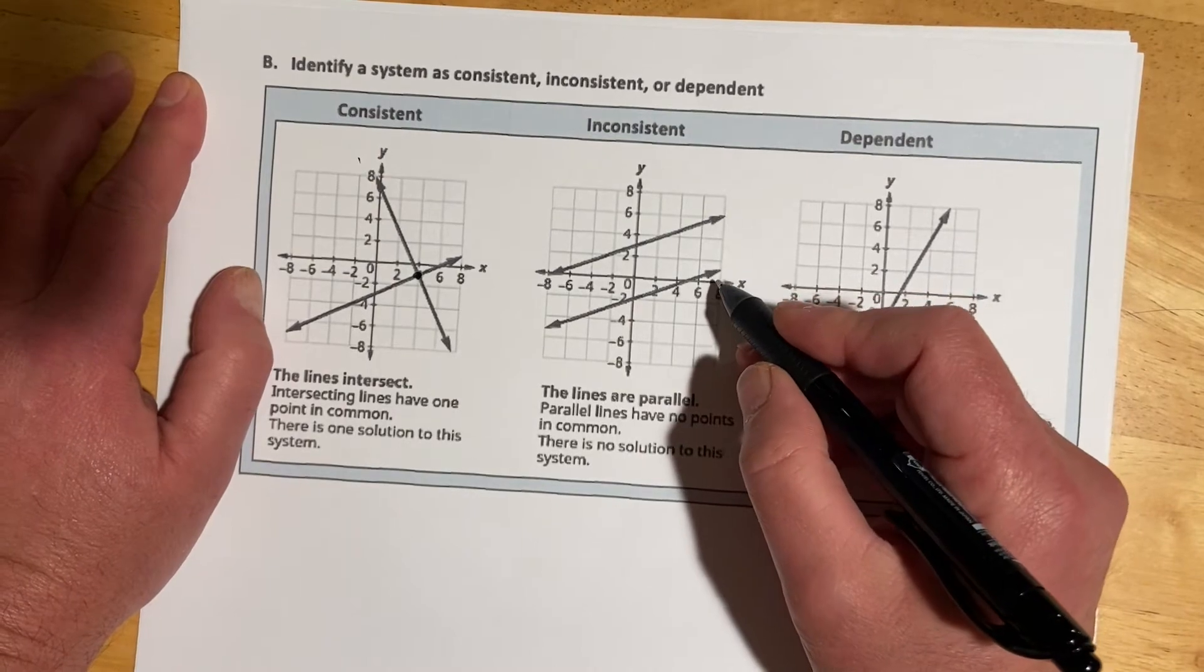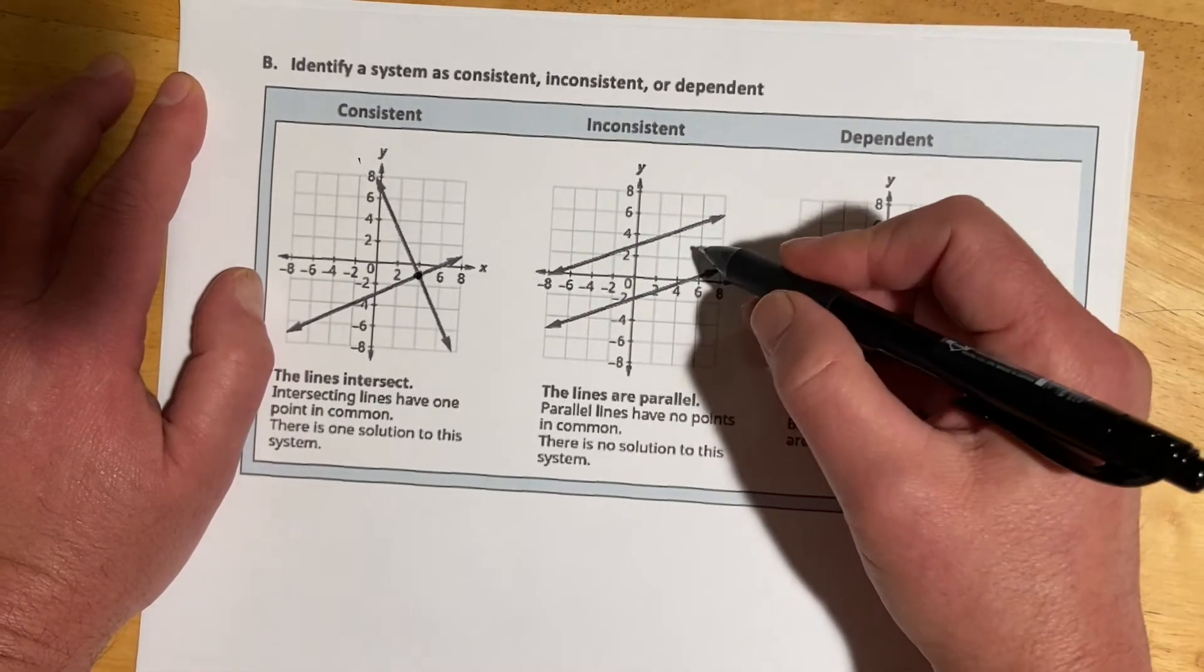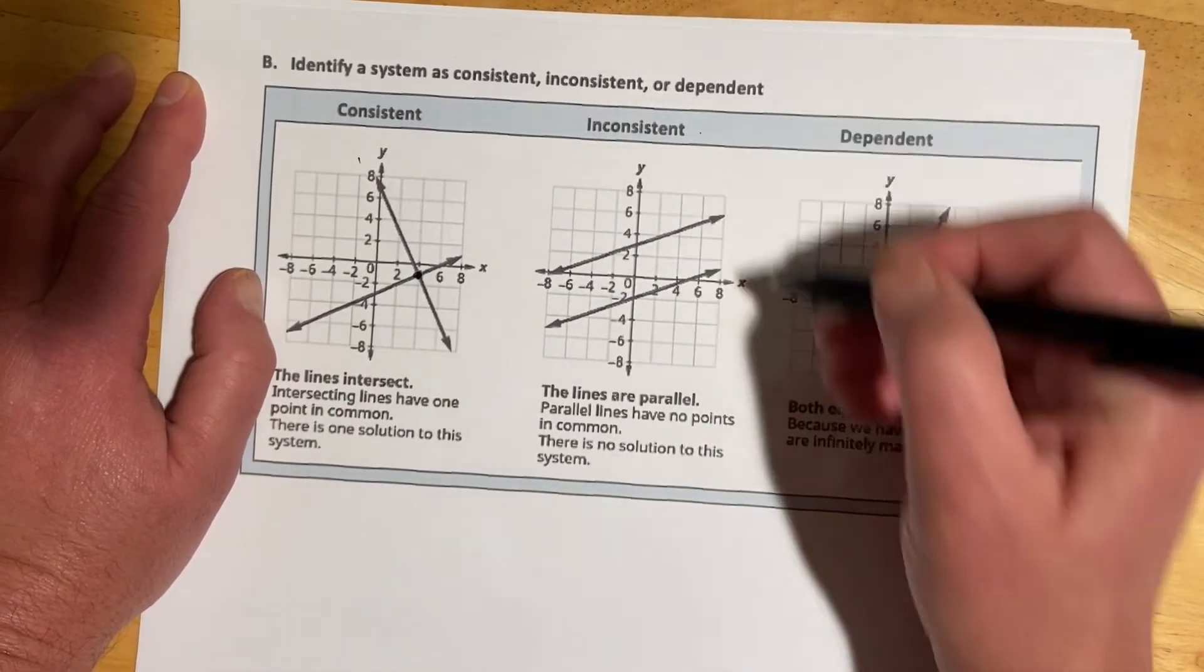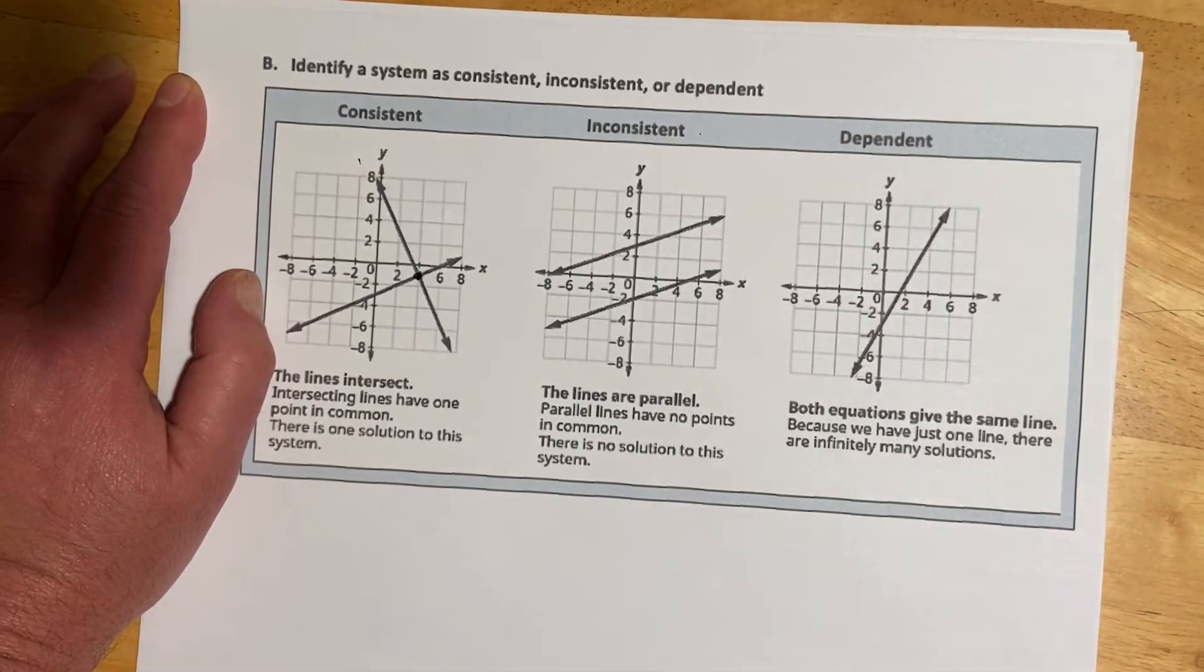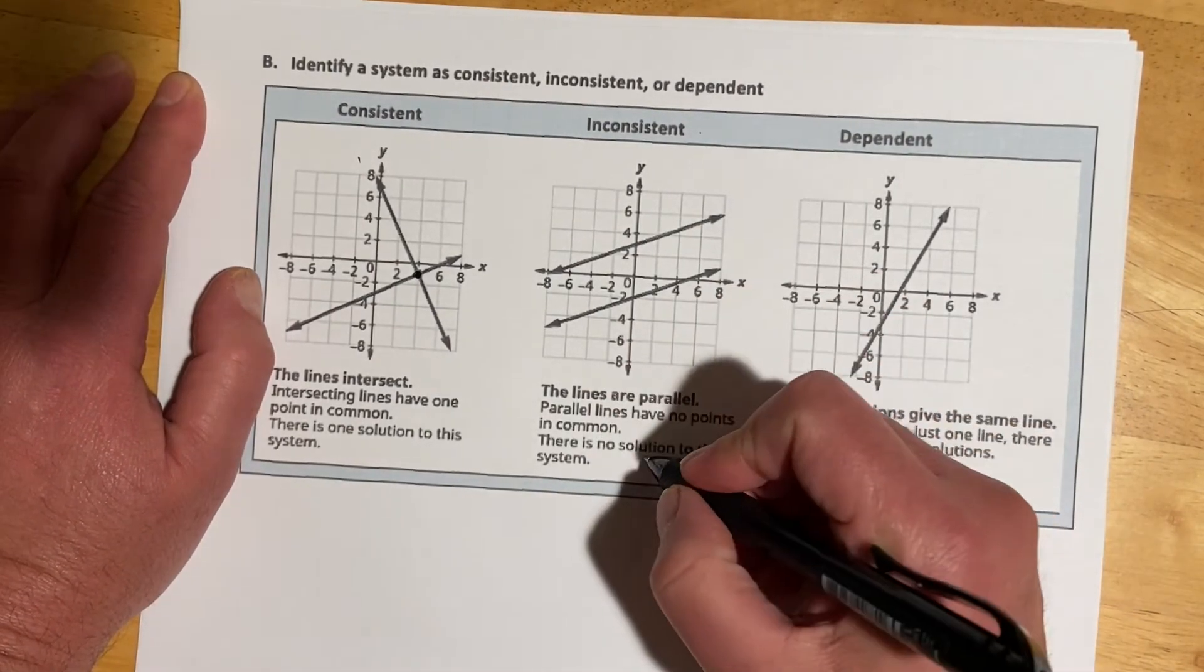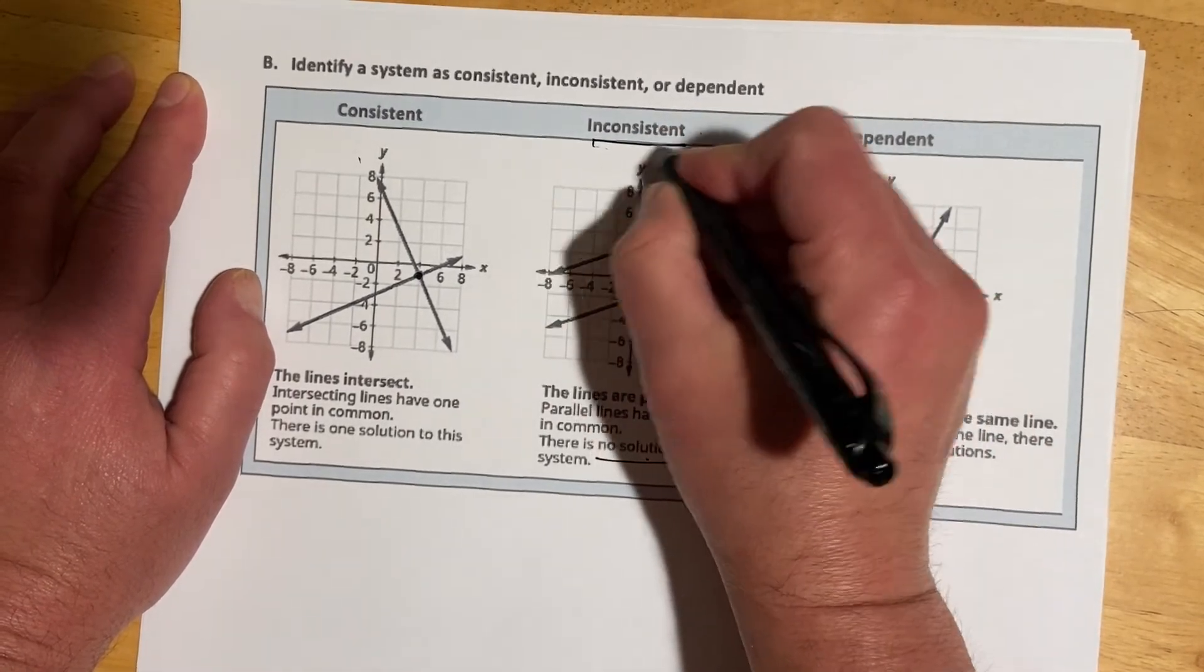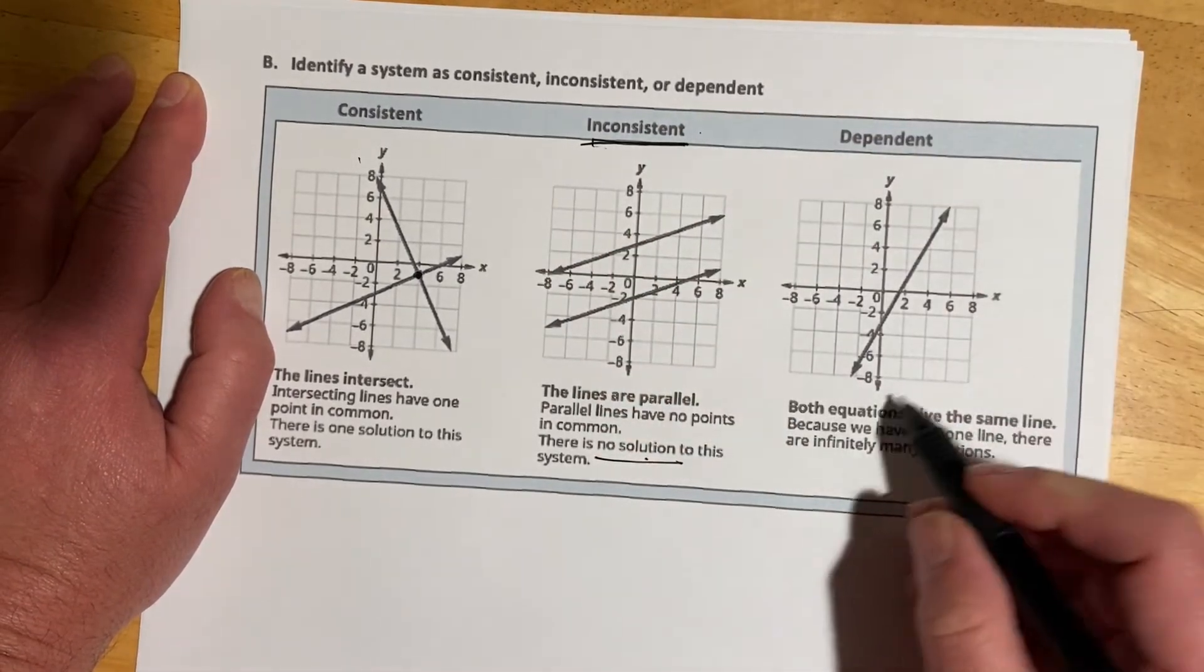If I graph the two lines, and then they turn out to be parallel to one another, then they're never going to cross, and so that's called inconsistent. So parallel lines have no points in common, so there's no solution to this. So no solution goes with inconsistent.